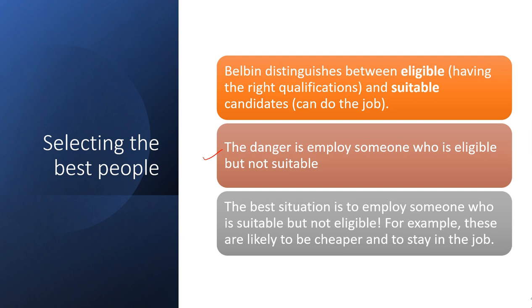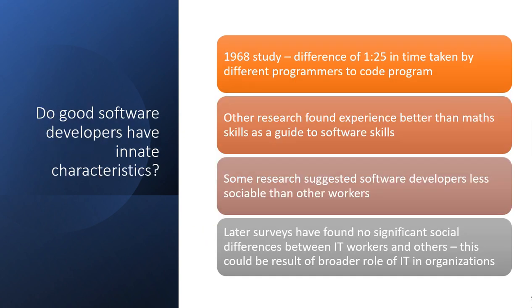The best situation is to employ someone who is suitable, who may or may not be eligible. The suitable employee stays for a longer time in the job. Good software developers have innate characteristics — software developers have specific characteristics.